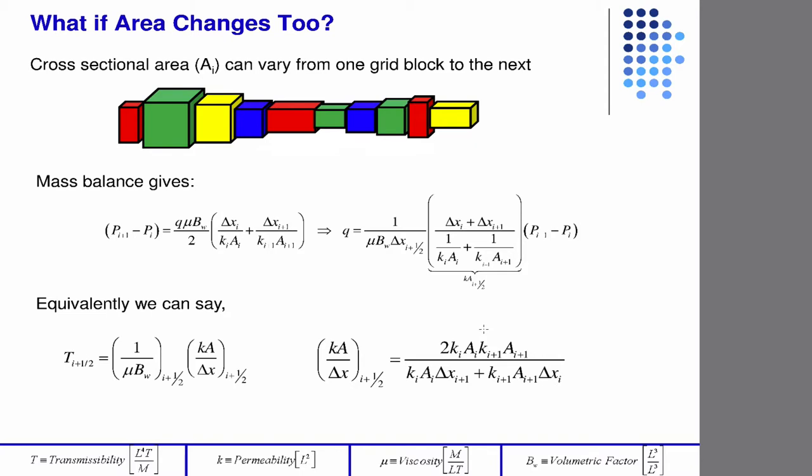We didn't talk about area changes, but you can have area changes too, and in that case, where you have variability in the area, this really only makes sense in a one-dimensional reservoir. Because in a 2D reservoir, your grid blocks have to connect. So the variation in the area really only makes sense in a one-dimensional reservoir.